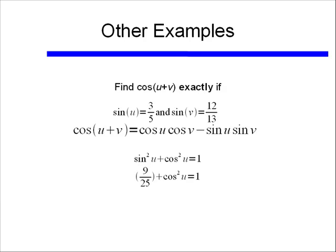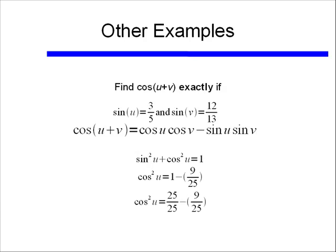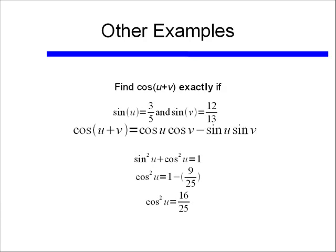If I go ahead and square those, I get 9 over 25. If I subtract 9 over 25 from both sides, I find that cosine squared u equals 1 minus 9 over 25. Finding a common denominator and doing the subtraction, cosine squared u is equal to 16 over 25. Taking the square root of both sides, cosine of u is simply equal to 4 over 5.